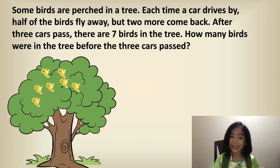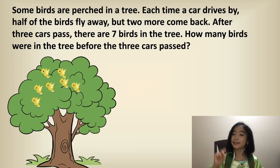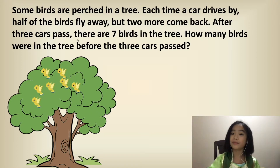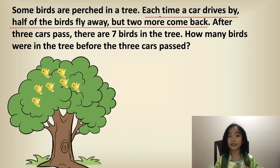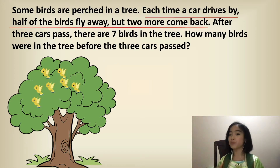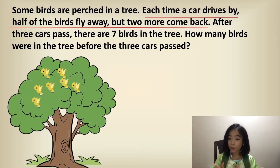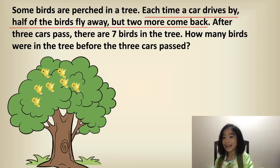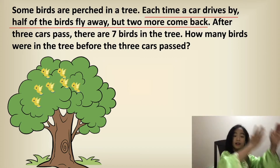This is what it looked like after the three cars passed. So there is one very important piece of information in this word problem: each time a car drives by, half of the birds fly away, but two more come back. We are going to use the backward method to figure this out. So basically, we are going to start from the ending and go to the beginning.